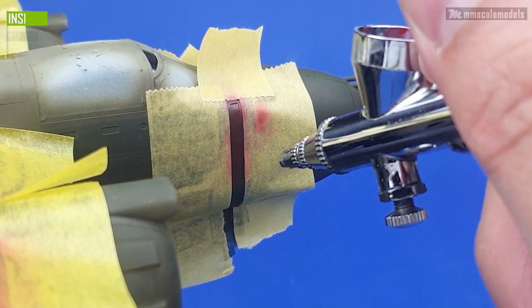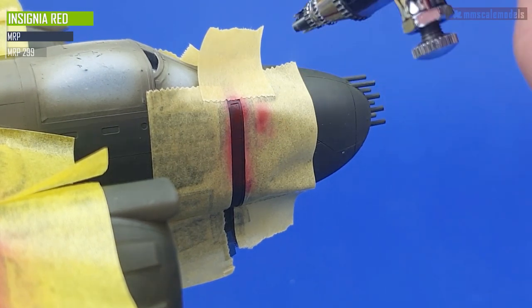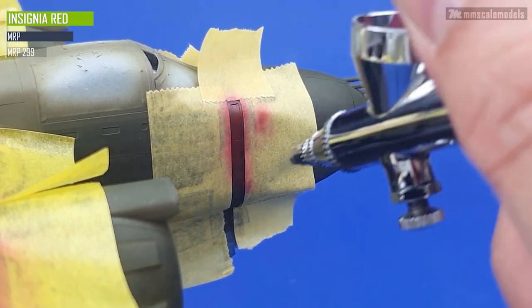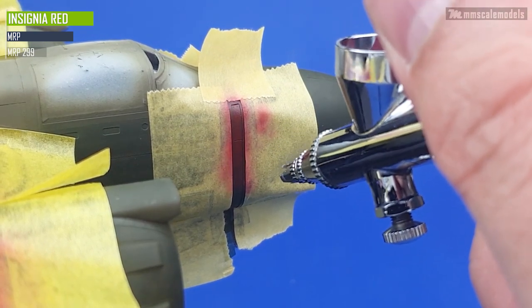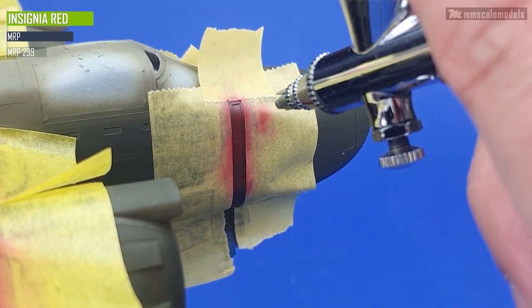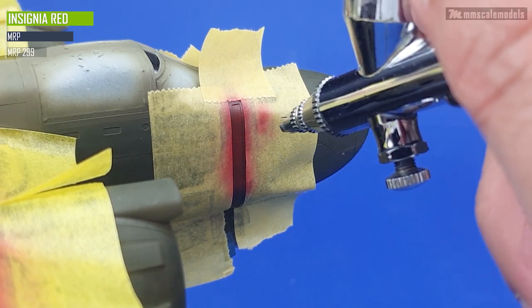Next up comes the insignia red. First for some service stencils like this here that mark where the propeller goes and the walkways on the top of the wings which I already painted.